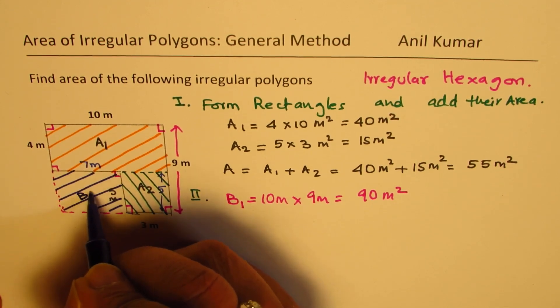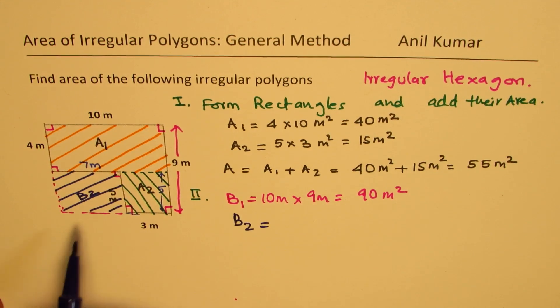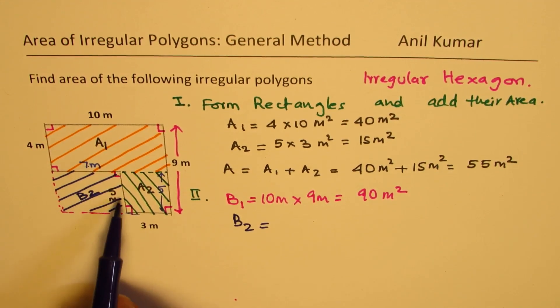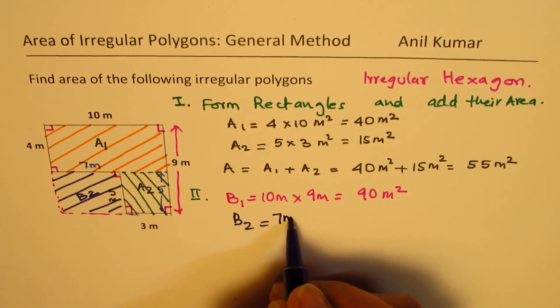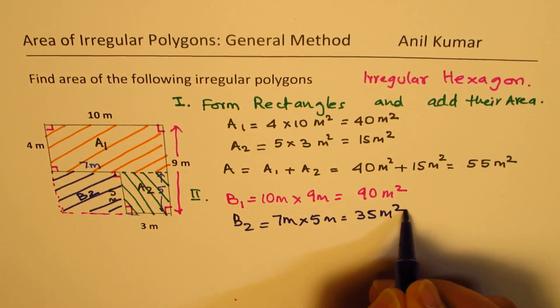So we are calling this as B2. So B2 is how much? Now this length is 7 and that is 5. So it is 7 meters by 5 meters, which is 35 meters squared.